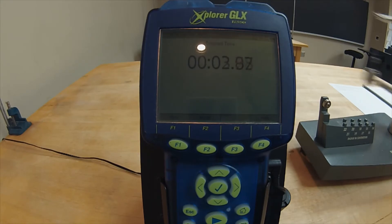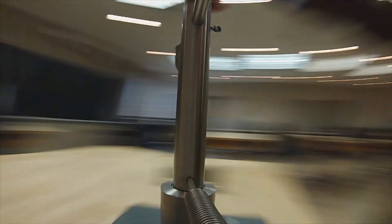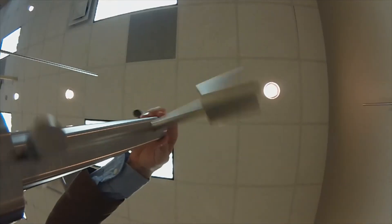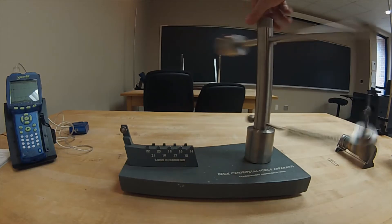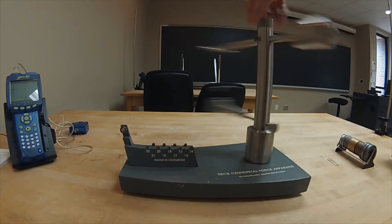Keep in mind that a complete revolution represents some point on your centripetal force apparatus passing you, going all the way around the circle, and then returning to you. This means that you could count revolutions from the bob, or from the counterweight, or really from any landmark on the apparatus, just as long as you are consistent.